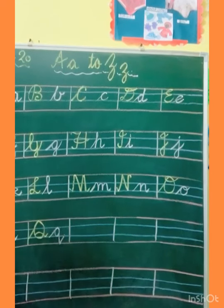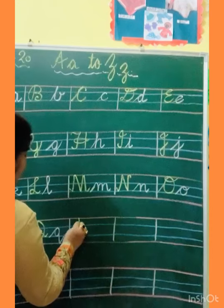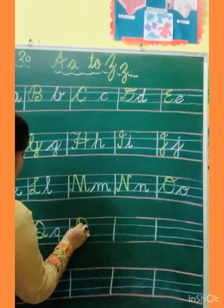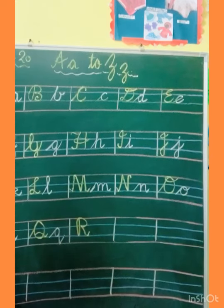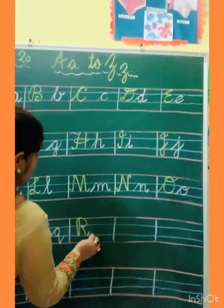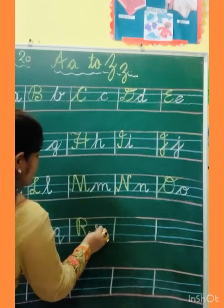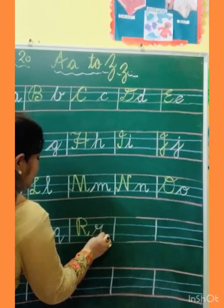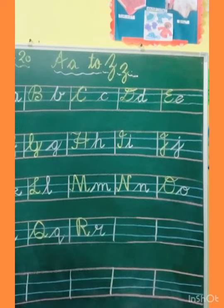After Q, R. Capital R: standing line, turn, make circle, make slanting line, and kick. And small R: slanting, turn, touch the second line, slanting line, and kick. This is R.